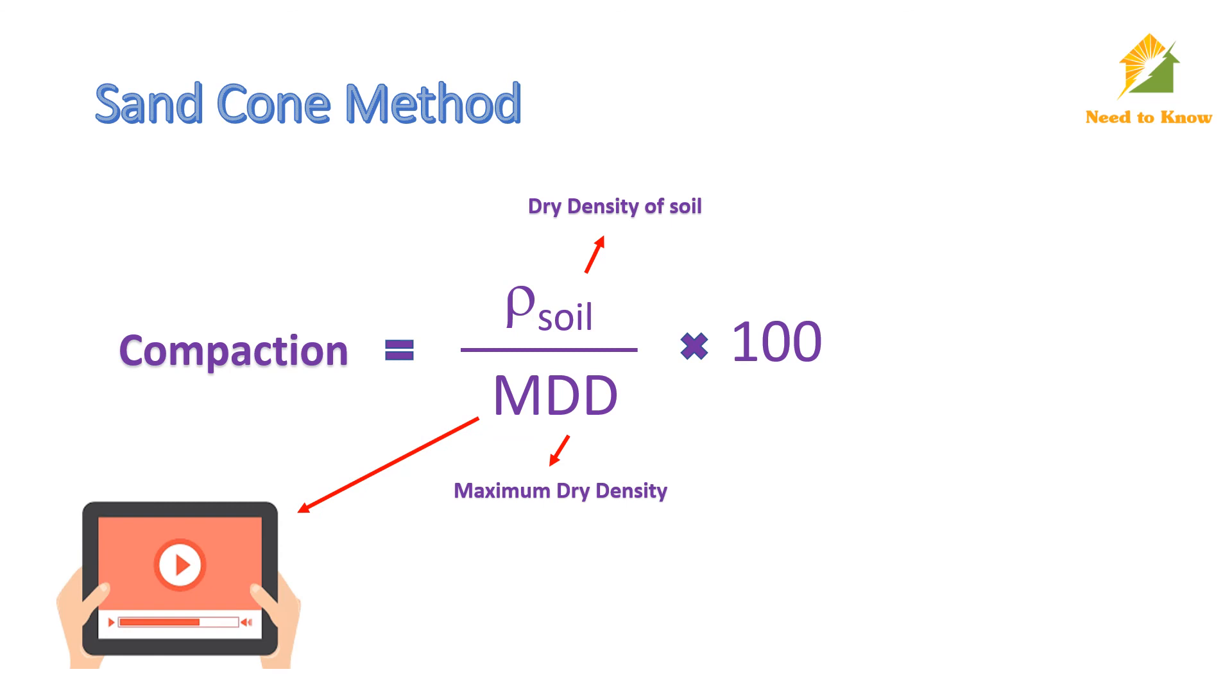Finally, we can calculate compaction by dividing field dry density of soil over maximum dry density. Compaction can be expressed in percentage. Maximum dry density calculation will be explained in the coming video. So thank you, stay tuned.